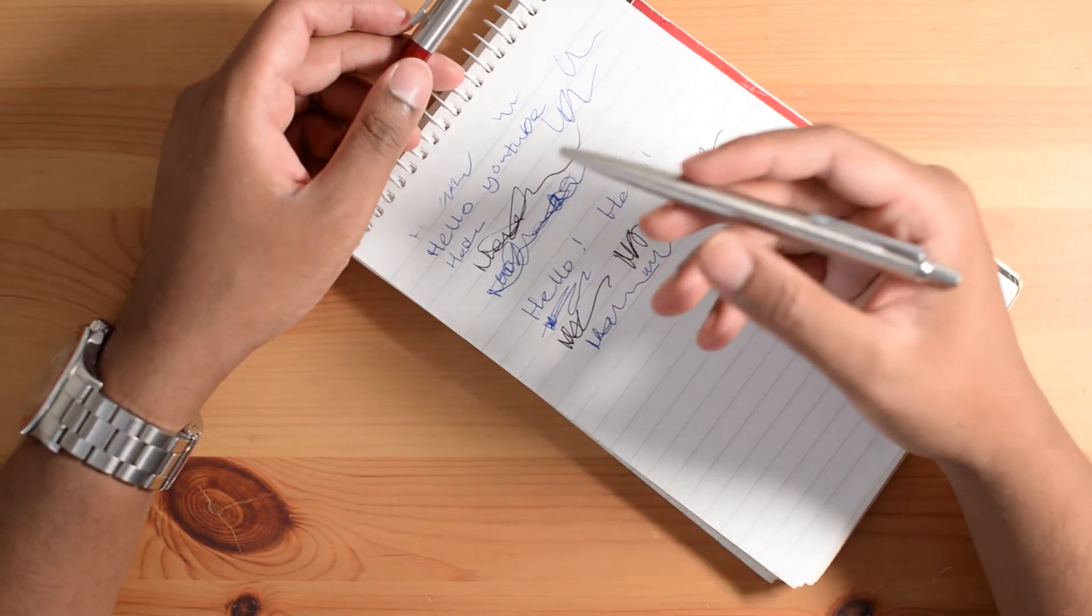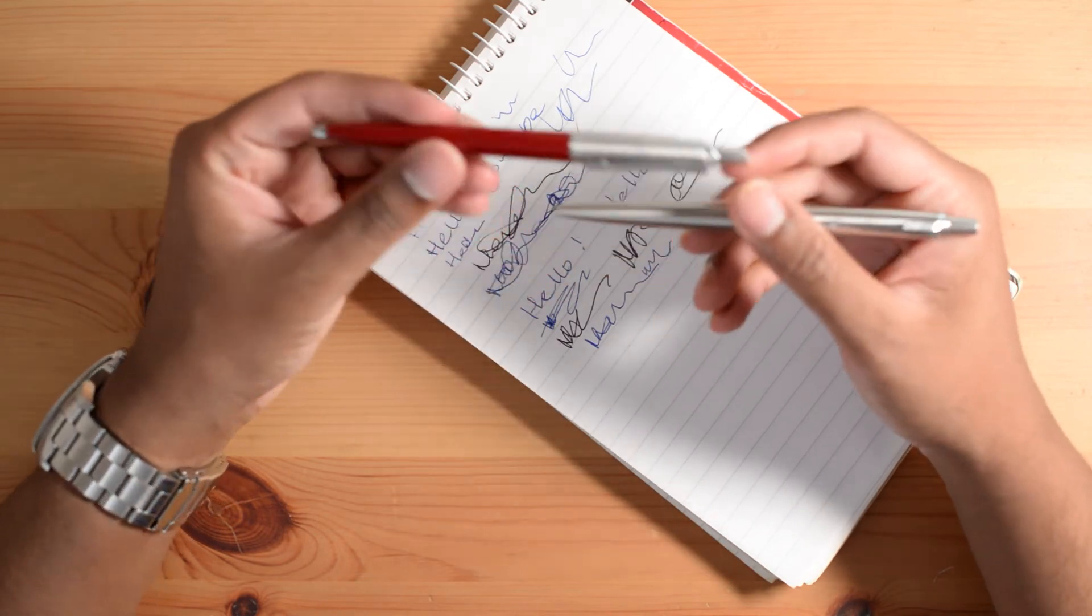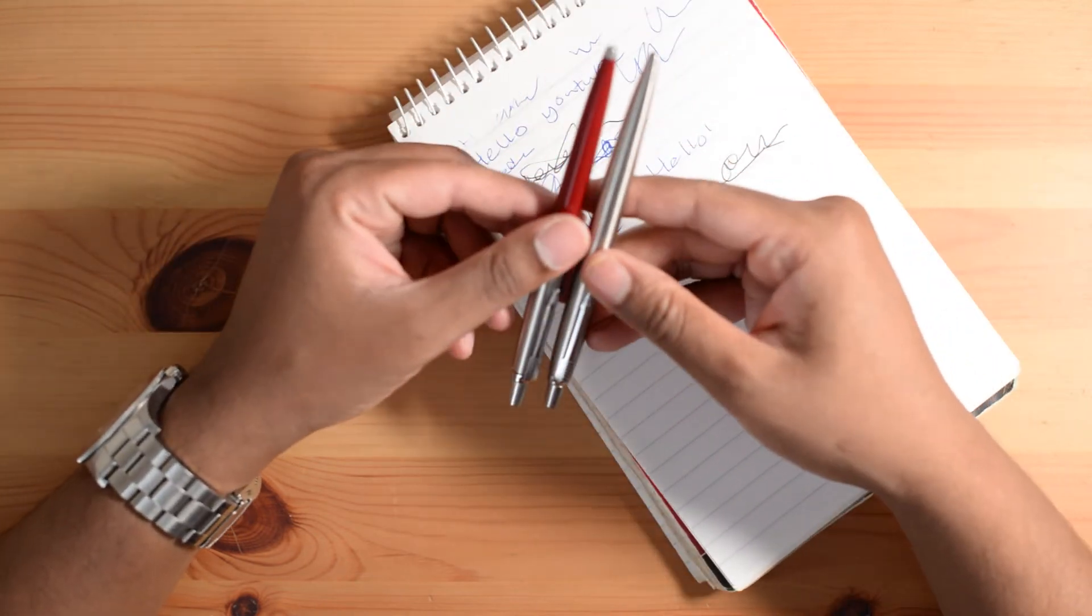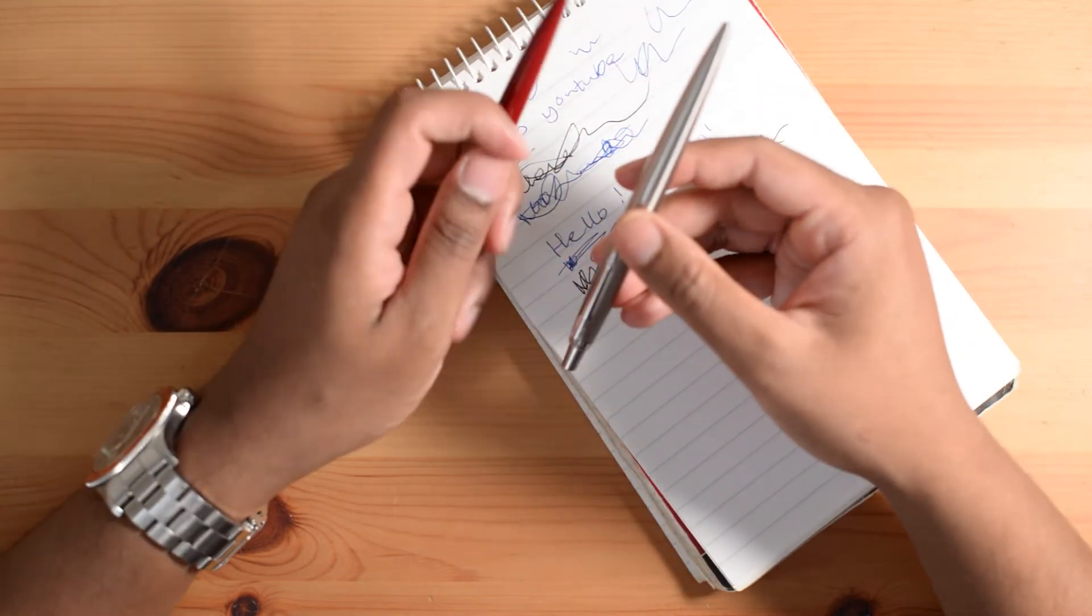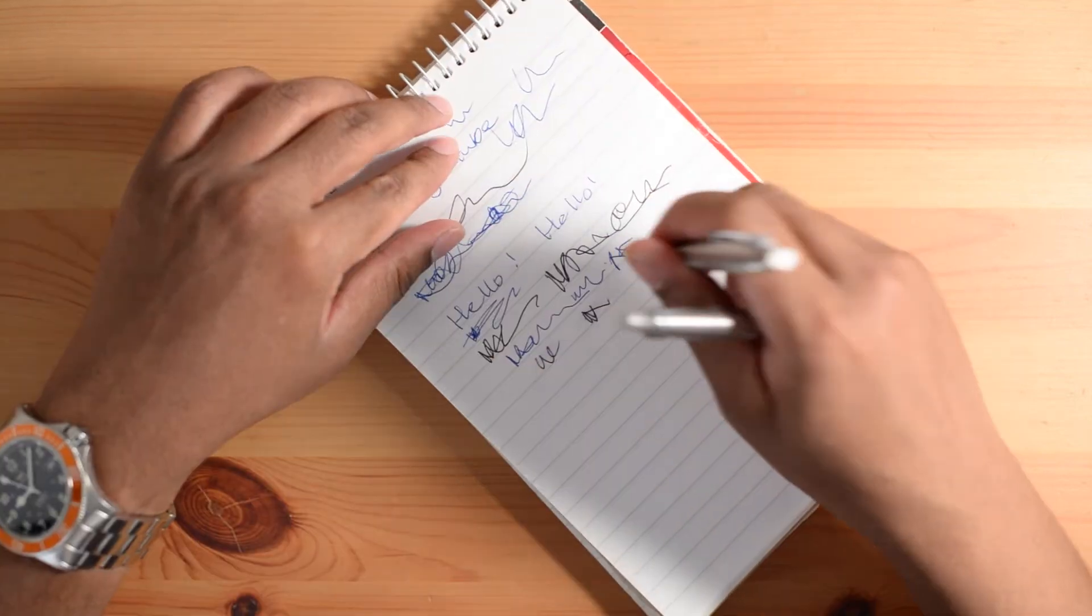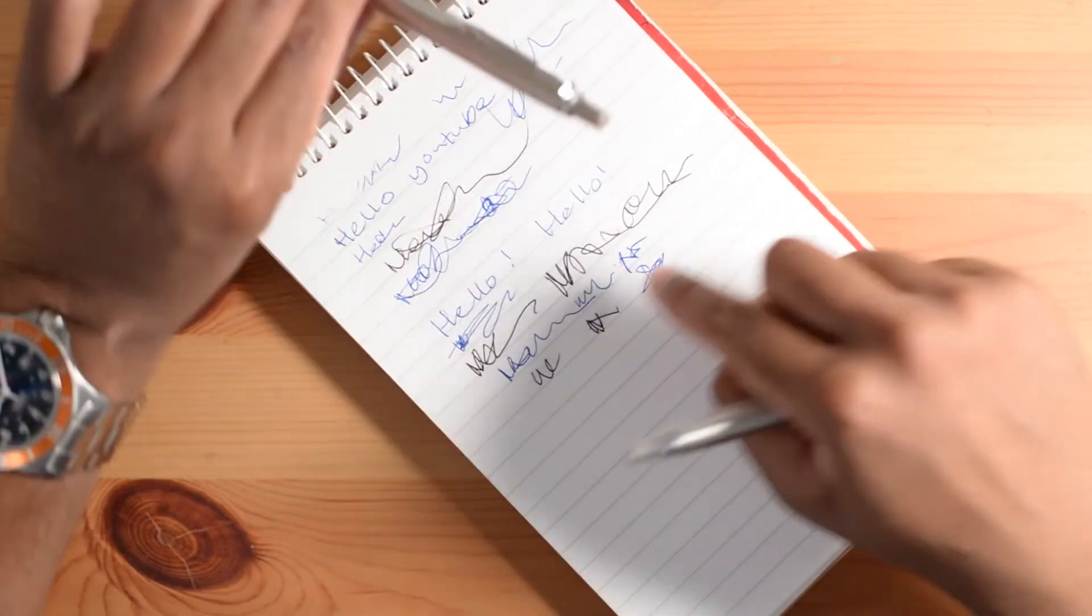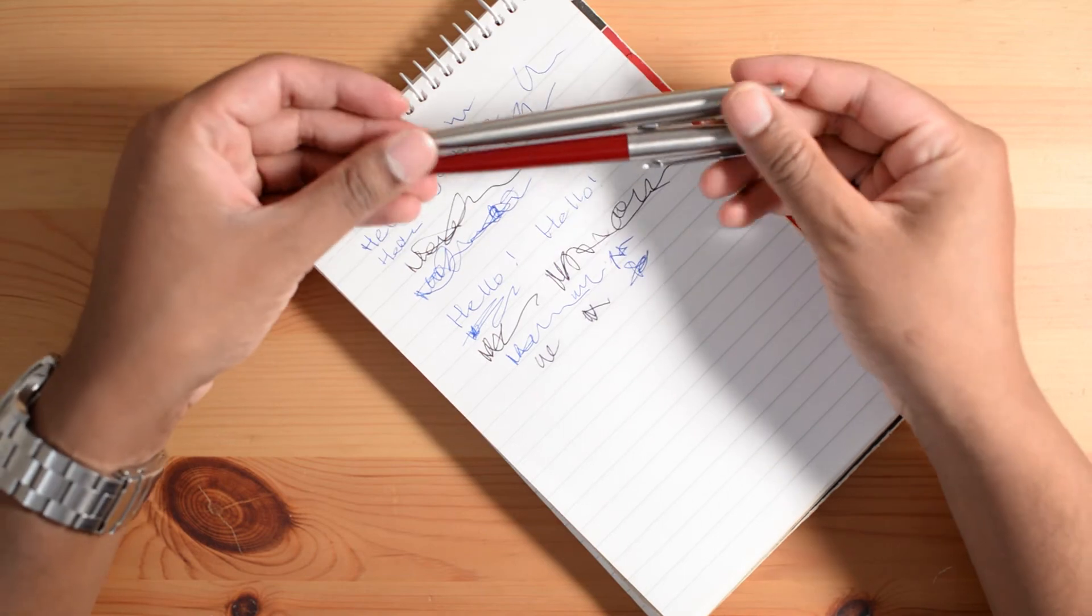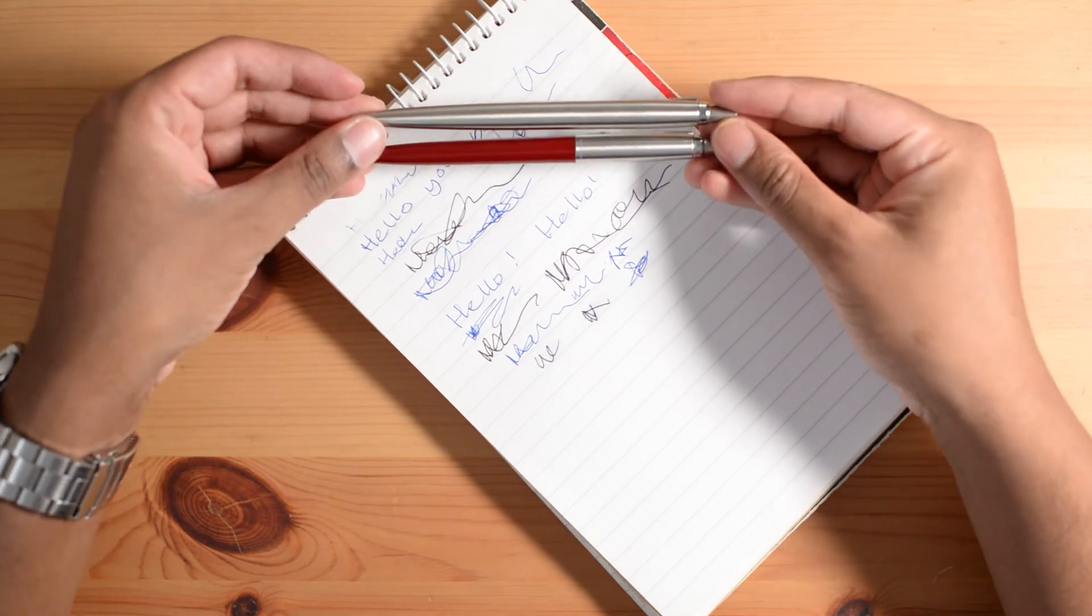I like using the Quink Flow Parker style G2 ink that comes with the pen. I've just gotten used to using that because I've been using it for many years. The ink doesn't smudge very easily although if you try really hard you can make it smudge. I think the Quink Flow Parker ink is very good for everyday carry use.